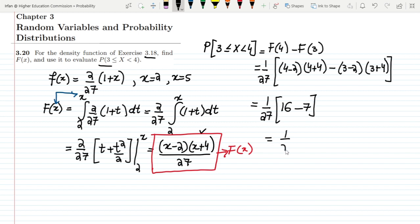1 by 27 and here 16 minus 7 is 9, and ultimately I will get here 1 by 3 which is basically the solution of it.